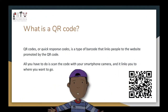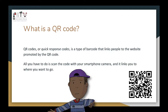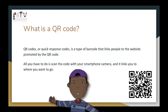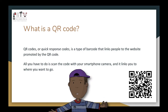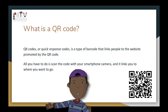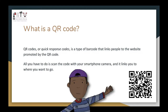A QR code, or quick response code, is a type of barcode — it's this image in the bottom right-hand corner. When you scan it with your smartphone camera, it will directly link you to a website or mobile app that the creator of the QR code intended you to go to. All you have to do is scan it with your smartphone camera and immediately it takes you there.